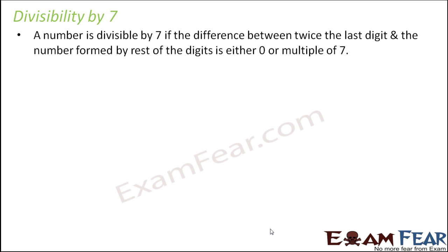The rule for divisibility by 7 states that a number is divisible by 7 if the difference between twice the last digit and the number formed by the rest of the digits is either 0 or a multiple of 7. This is not as simple as the rules for 2, 3, or 6 — it is a little complicated, but not very complicated.